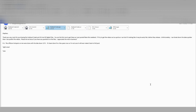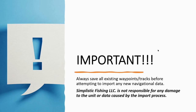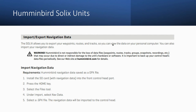Let's go ahead and switch over and talk about importing these into our graphs. The first thing I want to point out is make sure that you save all your existing waypoints and tracks before you do anything. If you are a Hummingbird Solix user, you're going to import the .gpx file. You're going to install the SD card in the front of the control panel, press the home key, select the Files tool, then under Import select Nav Data. You're going to see the name of the lake with .gpx behind it — just select that file name, import it, and you're good to go on the Solix units.